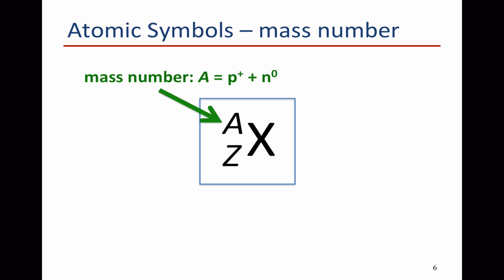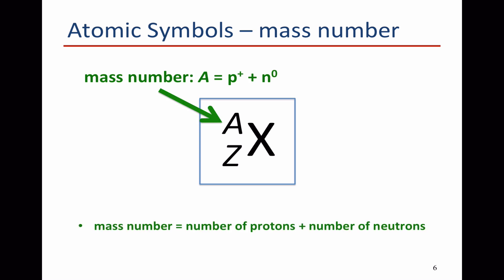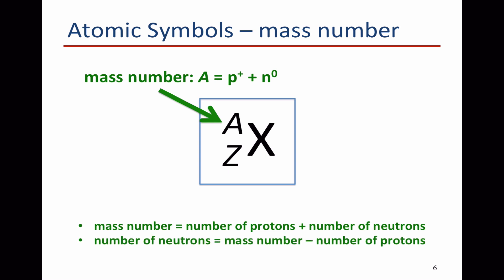The next bit of information is the mass number, which is written as a superscript to the left of the atomic symbol. The mass number is equal to the number of protons plus the number of neutrons, which is the mass of the atom. And because we already know the number of protons from the atomic number, we can use this to work out the number of neutrons. So the number of neutrons is equal to the mass number minus the number of protons.